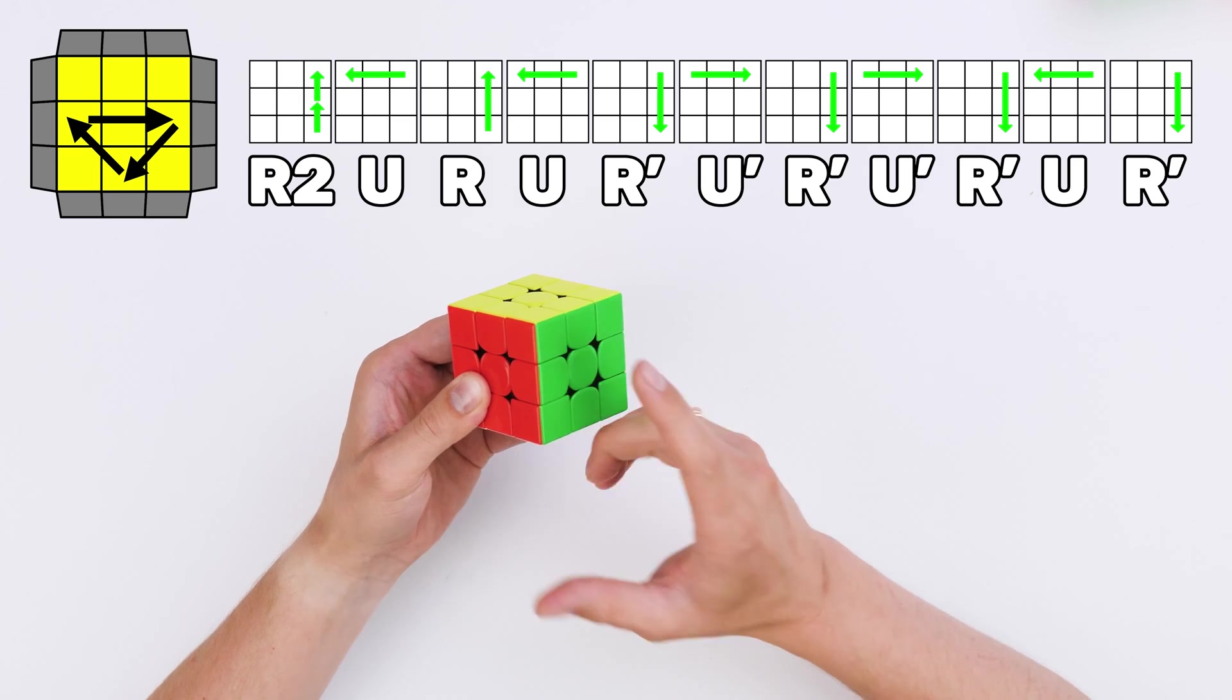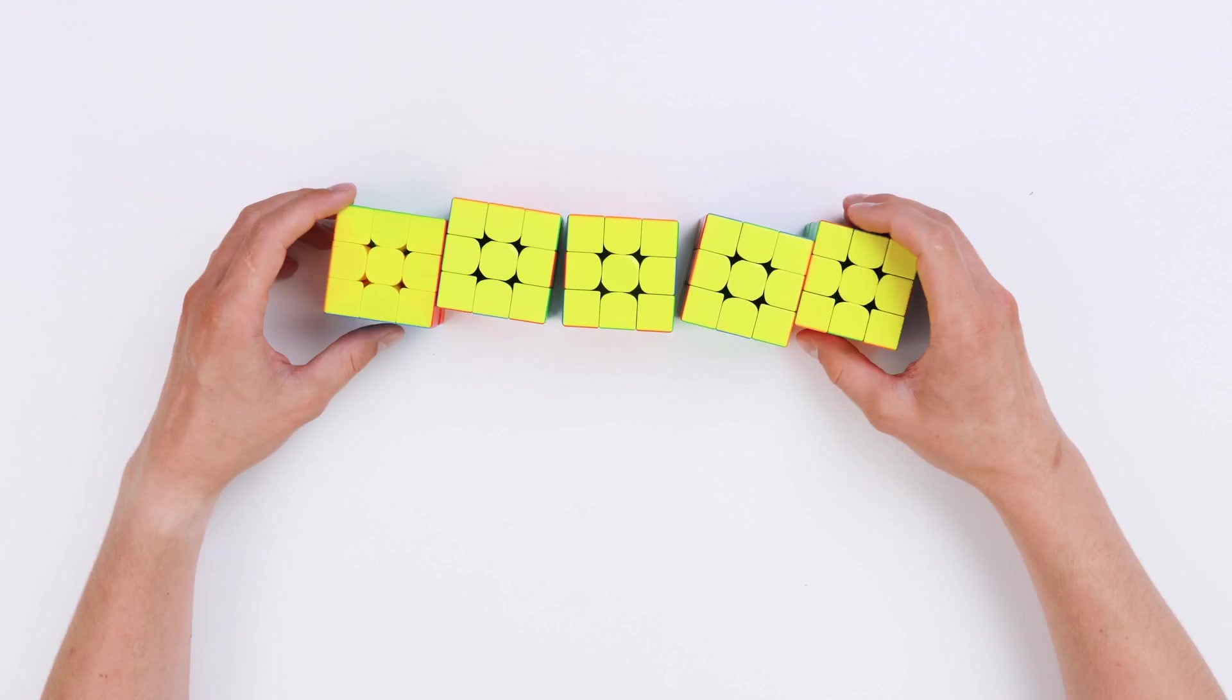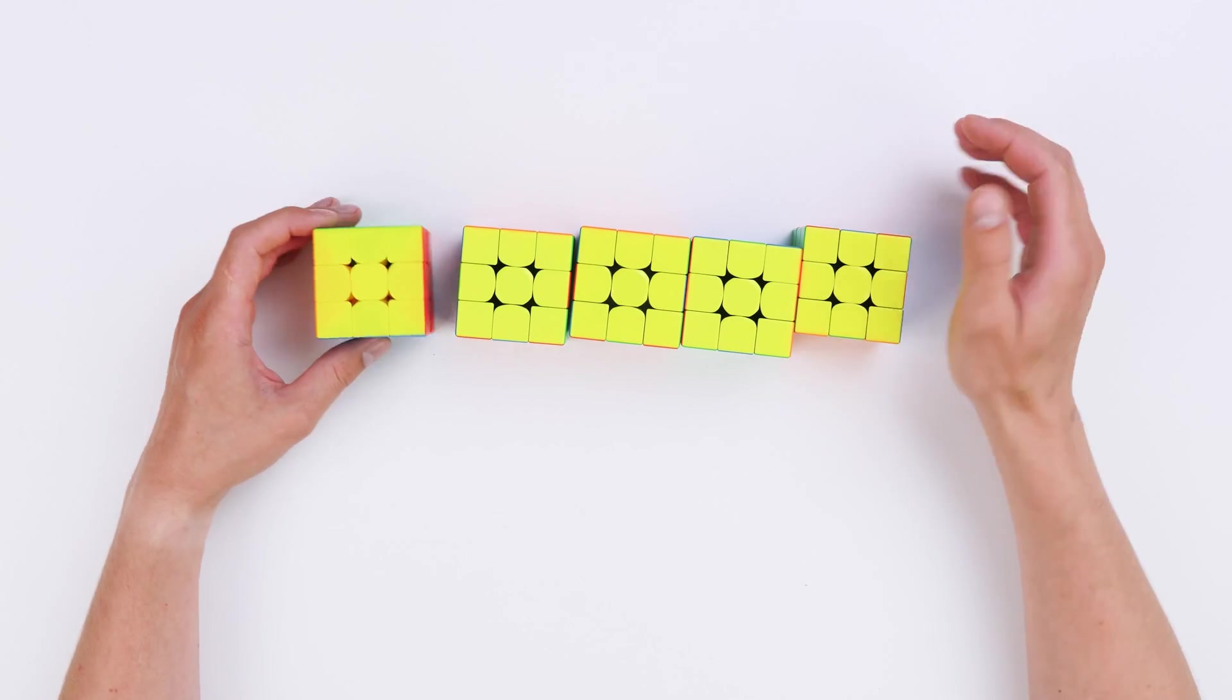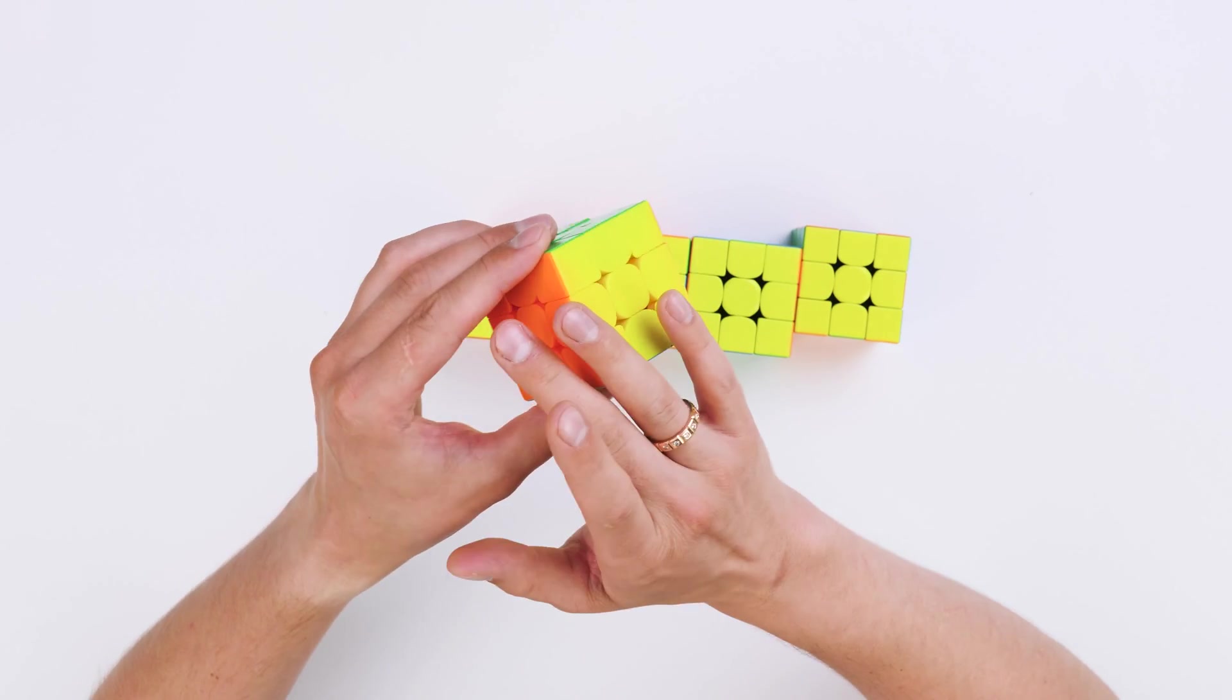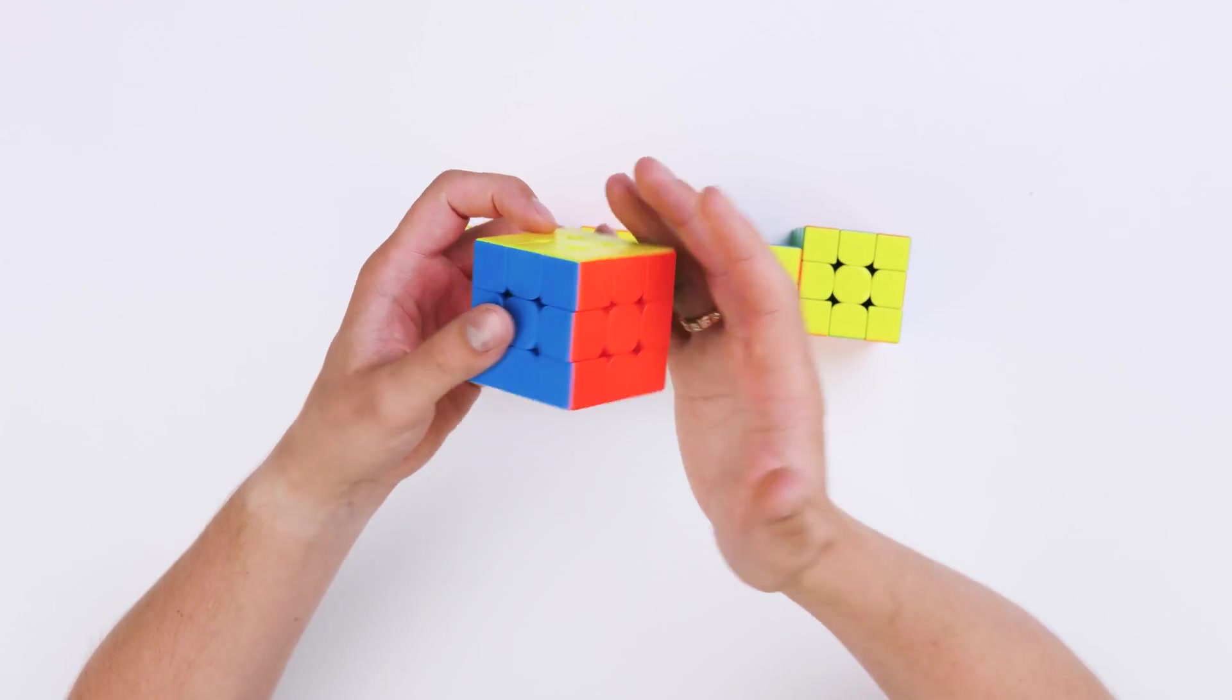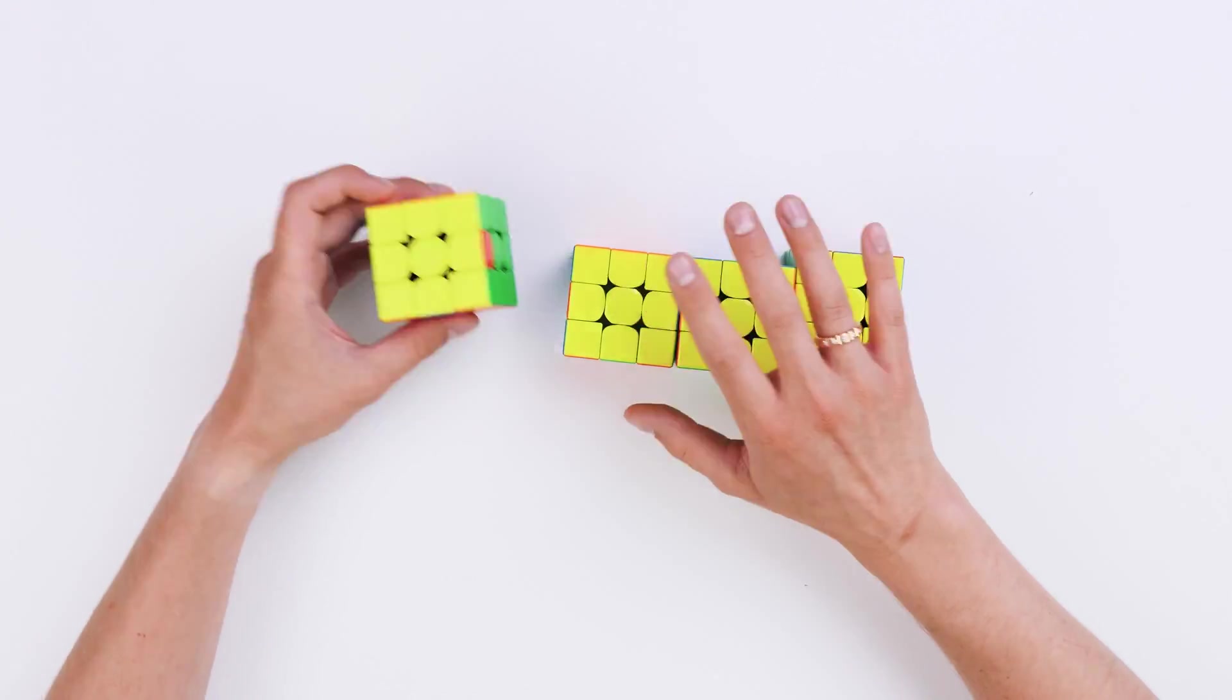A cube is solved, but that's not all. Now that you've learned U-perm, you know how it works. Let's learn how to use it in different cases. The first case, as always, is a situation where we don't need to do anything. We have already solved the cube, that's great. But we will take a look at other cases. So, we have this case where one block at the back is assembled, and these edges,